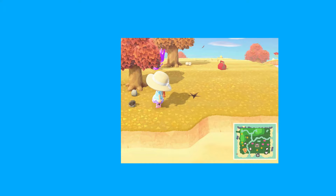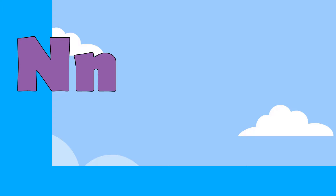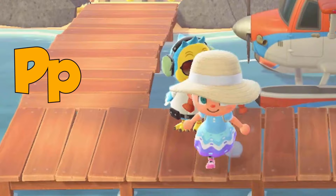M is for map, m, m, m. N is for nightingale, n, n, n. O is for ocean, o, o, o. P is for pilot, p, p, p.